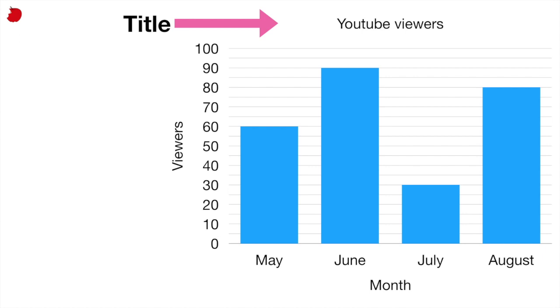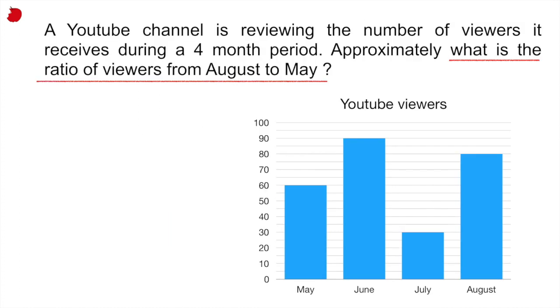First thing you should do is always look at the title because this is telling you what you're looking at. Here it's telling us that we are looking at YouTube viewers. Then look at the y-axis, which is the vertical axis, which is telling you here the number of viewers. We start at zero viewers. We go up to 100 viewers in increments of 10. And finally, you want to look at your horizontal axis, which is the x-axis, and this is telling you the months.